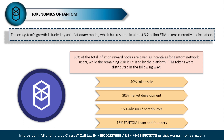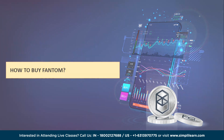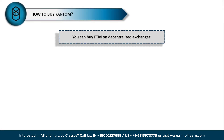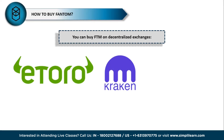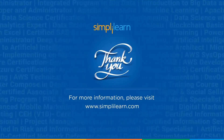Fantom tokens were distributed in the following way: 40% token sale, 30% market development, 15% advisors and contributors, and 15% Fantom team and founders. Now the question arises: how to buy Fantom? You can buy Fantom on exchanges like eToro, Kraken, Bybit, and MEXC.